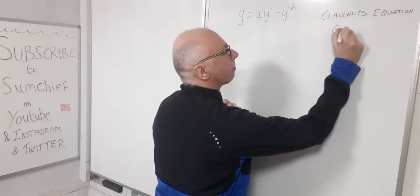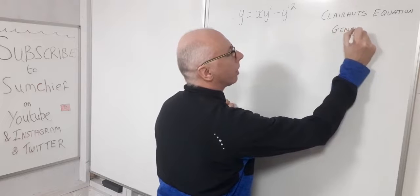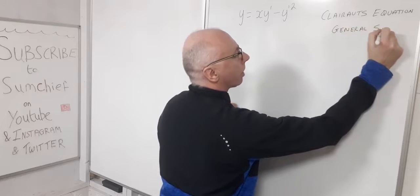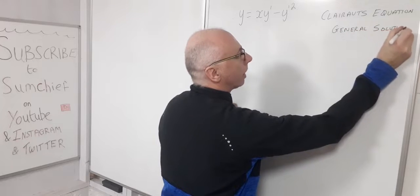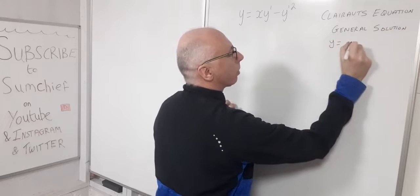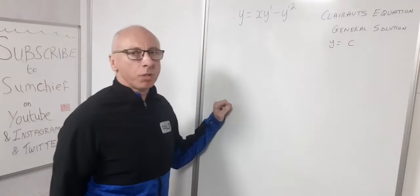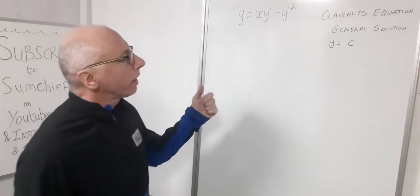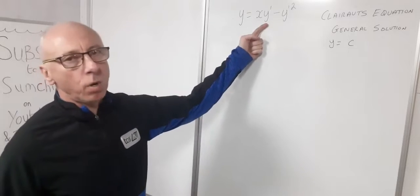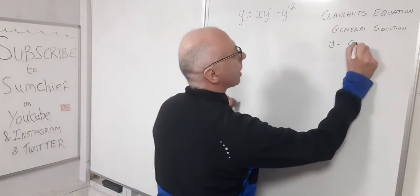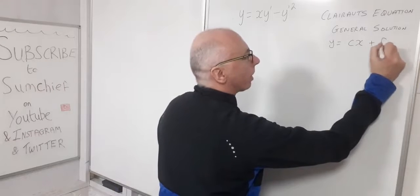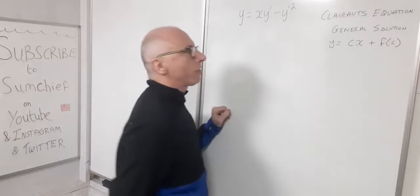First of all we have the general solution, so that's the first part of our building block and that is y equals, so we work in terms of c. So c in this case here will be our y prime. So cx plus f of c.